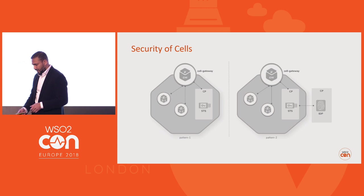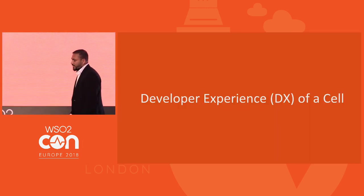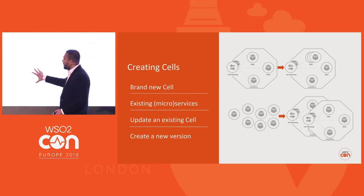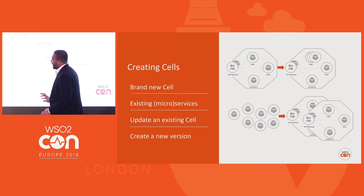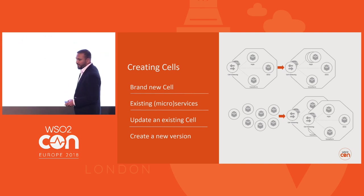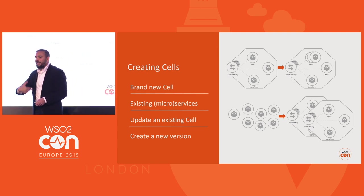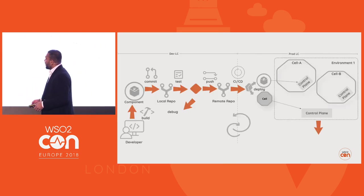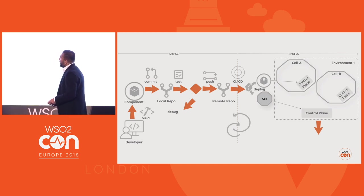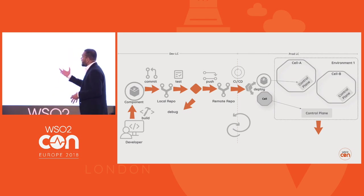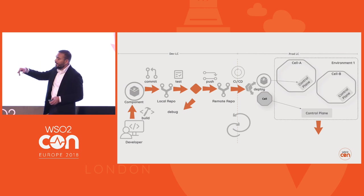When it comes to cell creation there are multiple ways. A developer might create a brand new cell and add features to it. Or if you already have microservices written, you can use those to create a cell and start maintaining it. You can also create new versions of existing cells — that's where reusability comes in. The developer's day-to-day experience won't change with this architecture pattern. A developer will write some code — that's a component — commit it to a local repo, test it, and if tests pass, push it to the remote repository. If it fails, debug and iterate.